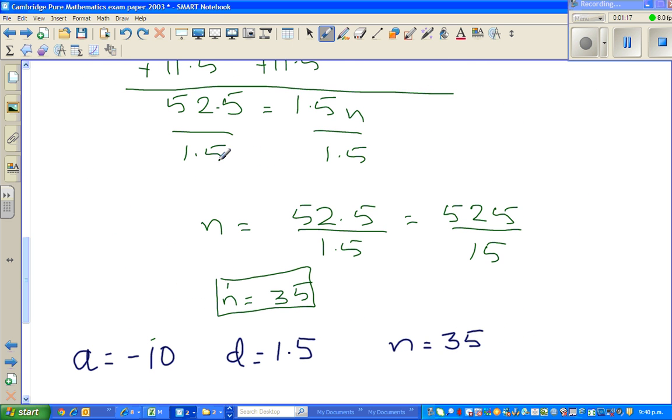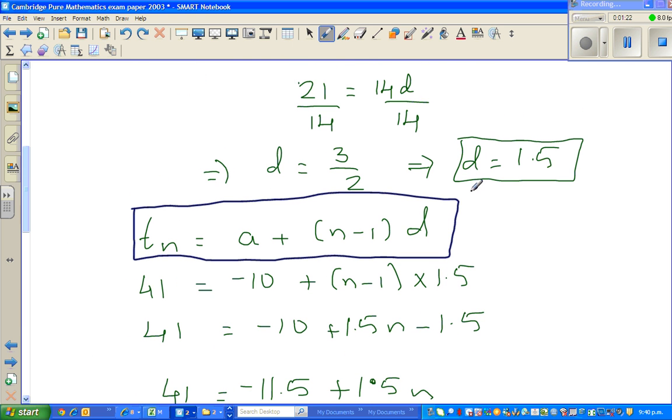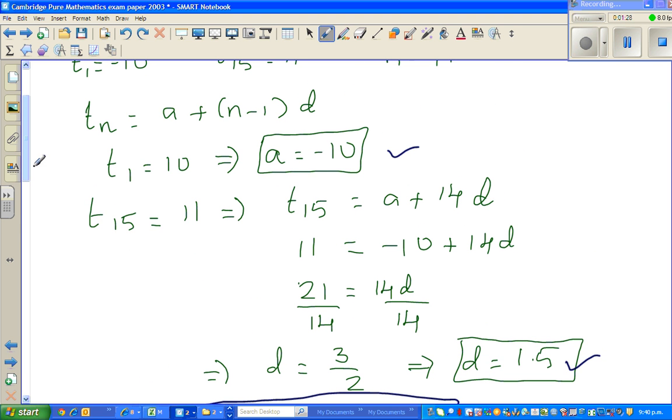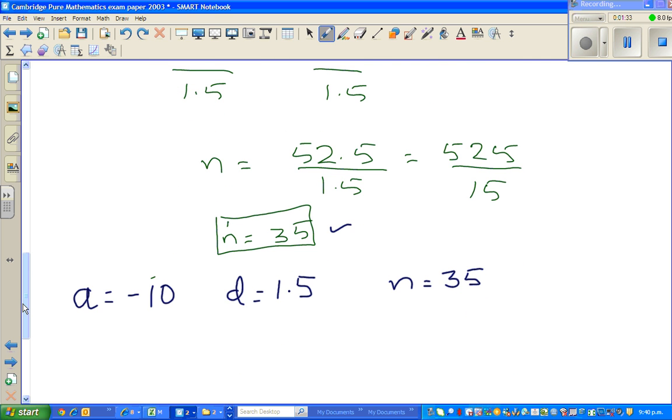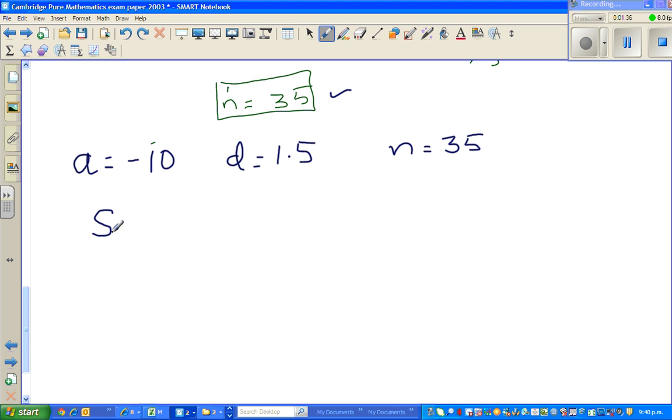n was 35, and we saw that d was 1.5. That is our d. This is our a, and this is our n. So now, the formula of Sn, which stands for the sum of n terms, is n over 2 times 2a plus n minus 1 times d.